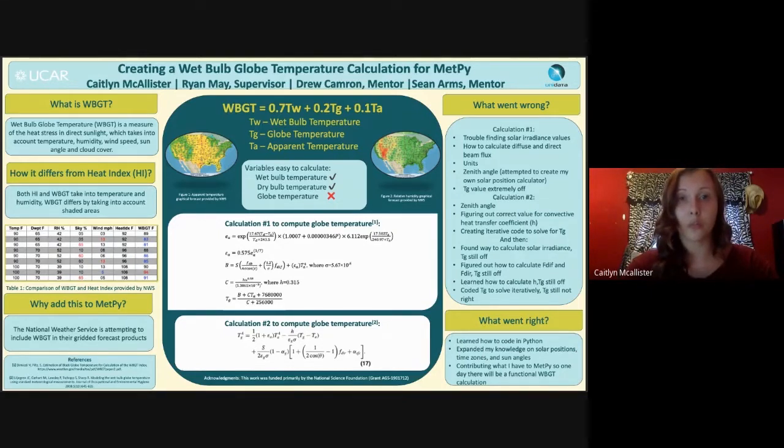The first calculation given by Dr. DiMicelli for globe temperature involved parameters such as solar irradiance, a convective heat flux coefficient, direct beam flux radiation, and diffuse beam flux radiation variables, which I did not find to be regularly collected and or available by the NWS. The article by Dr. DiMicelli and Steven Piltz also was not explicit when explaining how the numbers were obtained for these variables.